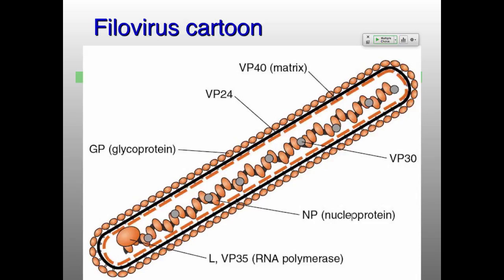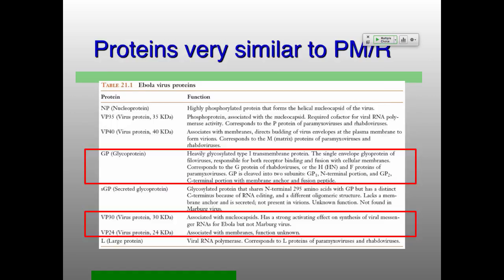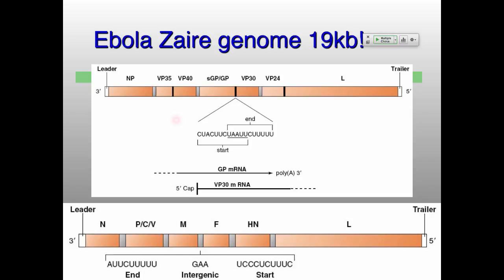If you look at the filovirus genomes, they should look extremely familiar. They've got a three prime leader sequence, the NP protein, VP35 and VP40, the GP protein, VP30, L protein, and all of these intergenic sequences. The paramyxovirus genome at the bottom looks extremely similar. These intergenic sequences are practically identical — they've got ends with a bunch of U's and start sequences. The filoviruses do have some overlapping reading frames with starts and stops right in the middle of genes. Why? Because evolutionarily it works, so we don't mess around with it.